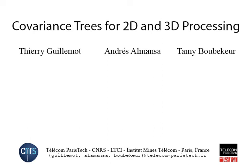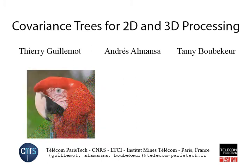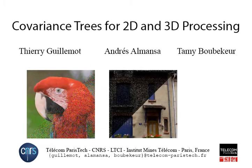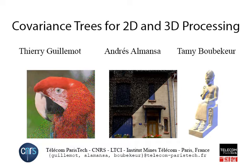In this work, we introduce the covariance tree, also called the cov tree, a flexible and generic tool to solve Gaussian mixture model-based image restoration tasks without the computational penalty or parameter tuning difficulties associated with its naive implementation.